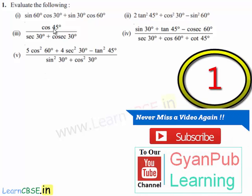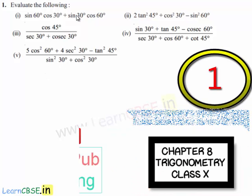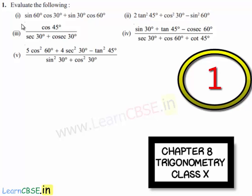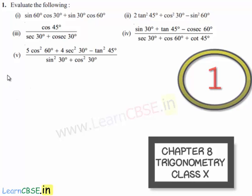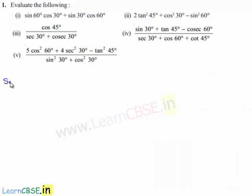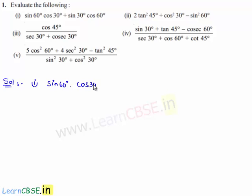Moving on to the first question: evaluate the following. Here he has given 5 bits, so let us find the solution individually. Now finding the solution for the first bit — the question is sin 60 degrees into cos 30 degrees plus sin 30 degrees into cos 60 degrees.